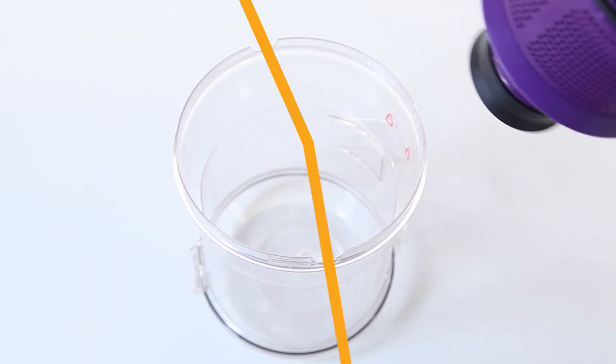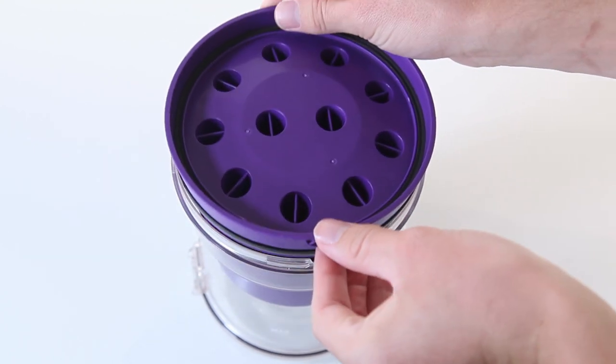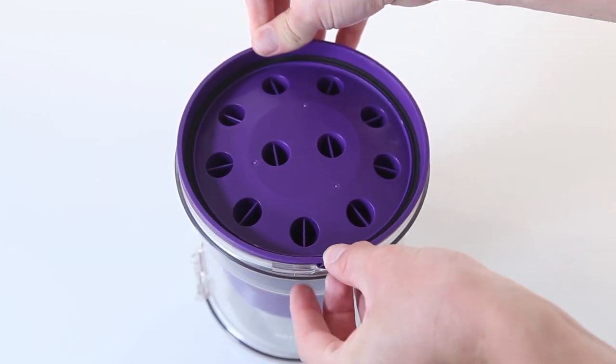Align the protruded blocks with the two recesses and firmly press down on the cyclonic body.